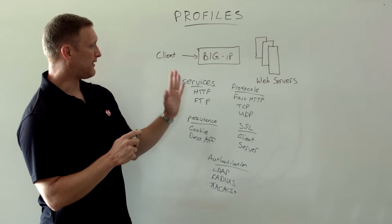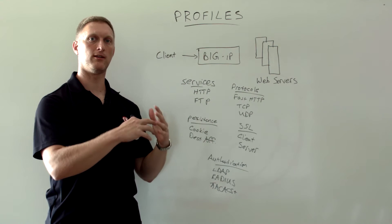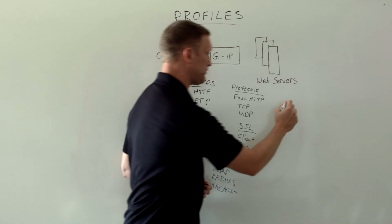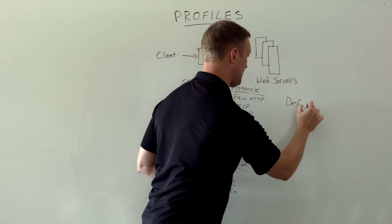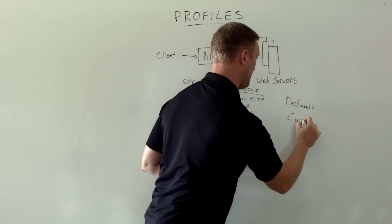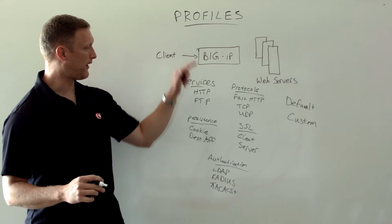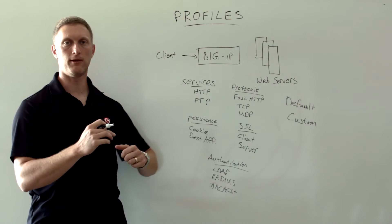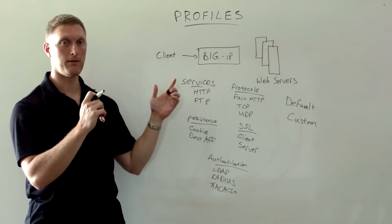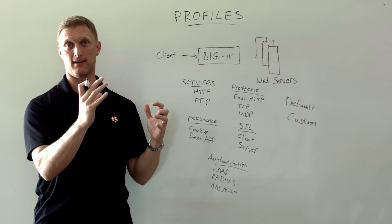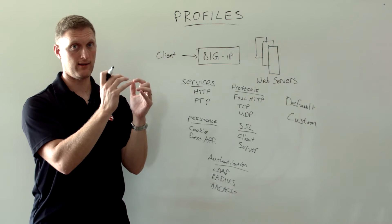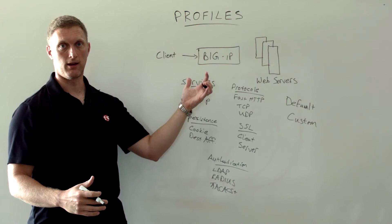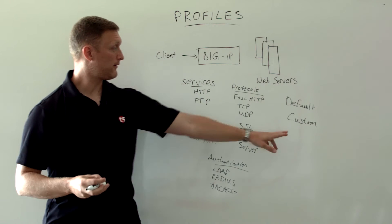We can get into more details on exactly how you can manipulate and set up these different profiles, but today we just want to make you aware that these things exist. A couple of things to mention about profiles: the concept of default and custom. For every single profile that exists on the BIG-IP, there are default settings already applied. For HTTP, for example, the BIG-IP already has a default HTTP profile that's highly optimized — the smart folks at F5 have configured it and decided how it needs to be set up. So there's a default for every single profile, and you can certainly use the default as you're setting up your BIG-IP and assigning profiles to different virtual servers.